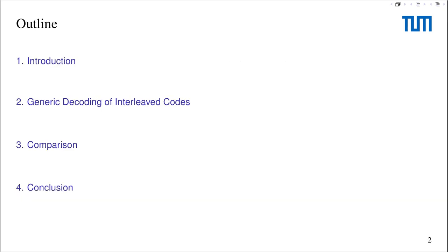This is the outline that I will follow. First, I will give an introduction to what interleaving is, and also explain the motivation behind looking at generic decoding of interleaved codes. Then in the second section, I will look at the various ways of doing decoding of interleaved codes, and explain a new such decoder called Interleaved Prange. And then in the third section, I will compare the various approaches.